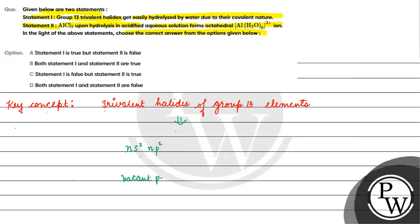That's why they can easily hydrolyze. When it has a vacant orbital, it has a tendency to accept lone pairs from water.